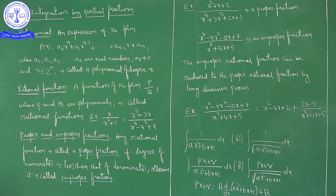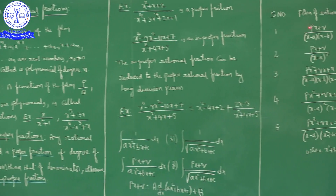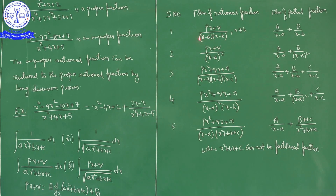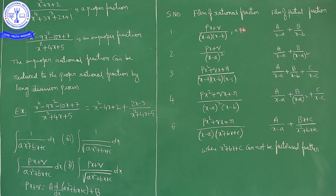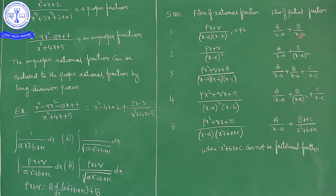Now we discuss rational fractions of different forms. Whenever you have a constant or linear numerator and the denominator is a product of non-repeated linear factors — say (x − a)(x − b) where a ≠ b — we write it as A/(x − a) + B/(x − b). This model involves non-repeated linear factors in the denominator.